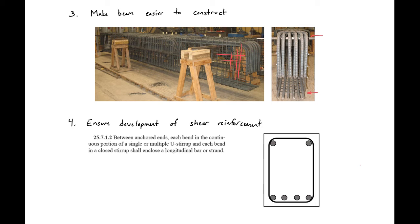The next reason we want to use compression reinforcement is it allows us to ensure proper development of our shear reinforcement. This is an ACI code requirement. When we have shear in our section, the shear reinforcement is going to be in tension, resisting shear by being in tension. The compression steel helps to properly develop our shear reinforcement.